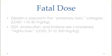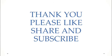Regarding the fatal dose, dieldrin is placed in the extremely toxic category with a lethal dose of 1 to 50 mg per kg. DDT, endosulfan, and lindane are considered highly toxic — slightly less toxic than dieldrin — with a lethal dose ranging from 51 to 500 mg per kg.